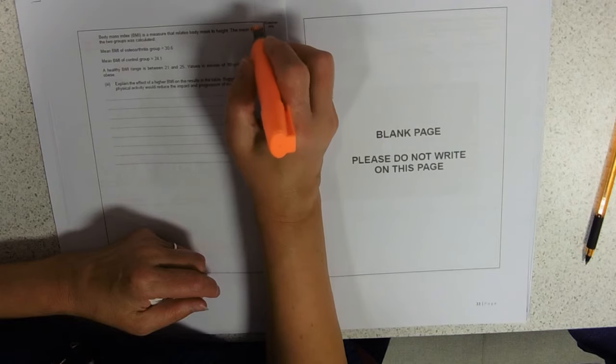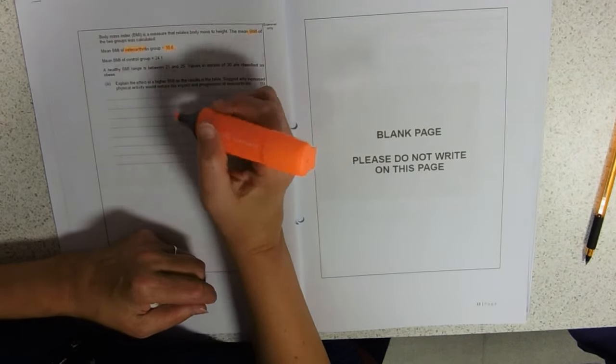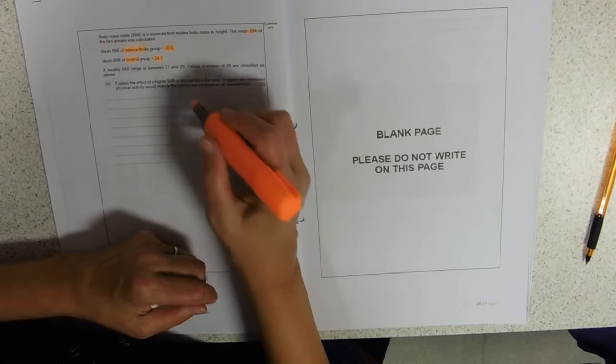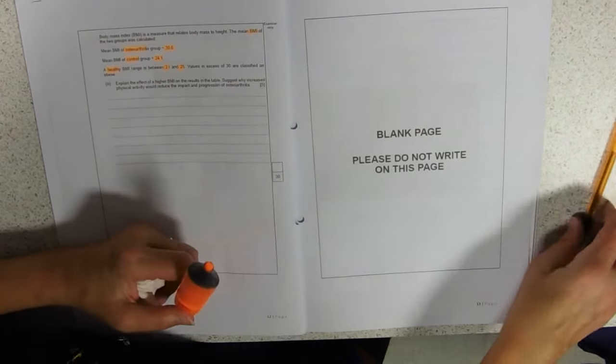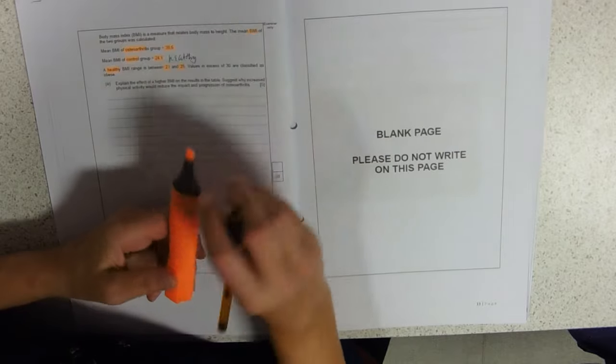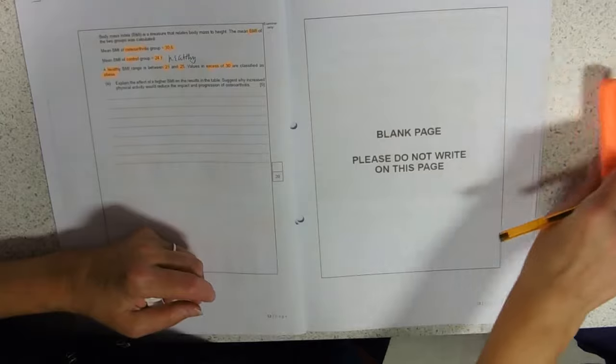Mean BMI of the two groups. Osteoarthritis, they're 30.6. Control group, mean one is 24.1. Healthy is between 21 and 25. So that tells us that this lot are healthy, healthy BMIs. And if it's over 30, these are all obese.